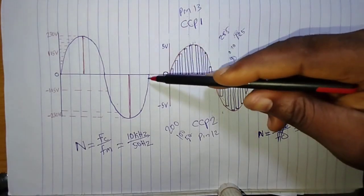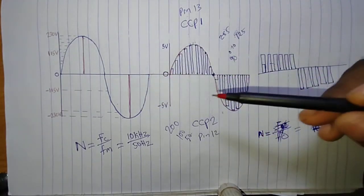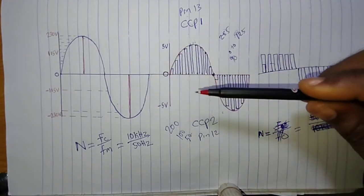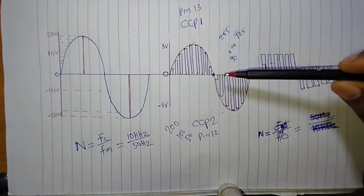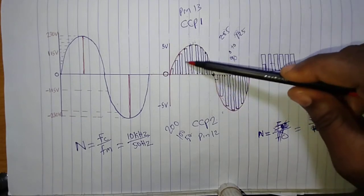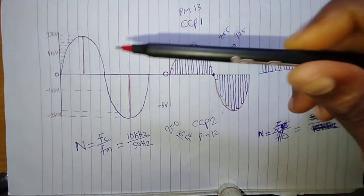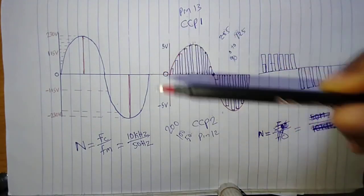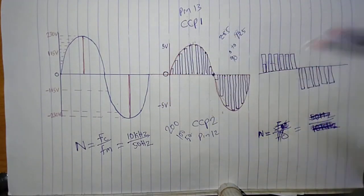To get the final clean sine wave output, you need to filter it using a capacitor or inductor to filter the final output. Let me now take you over to the software and show you how to generate this curve.